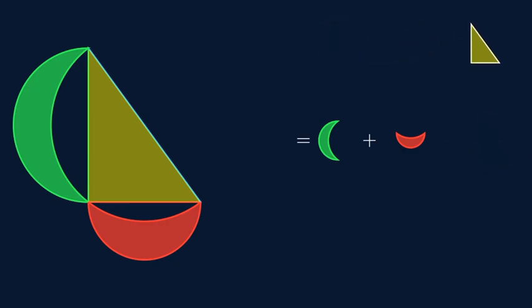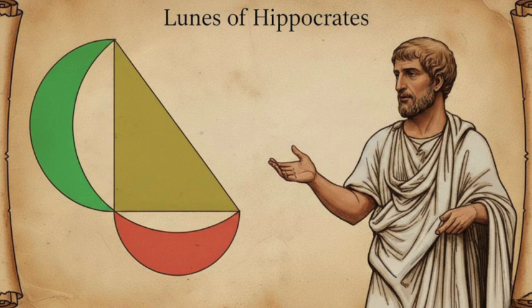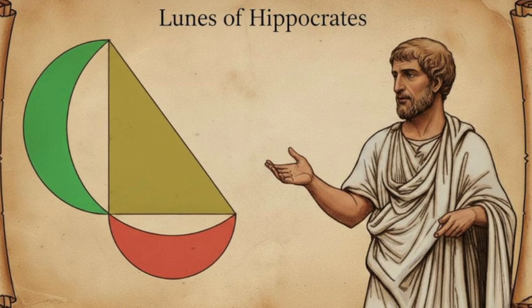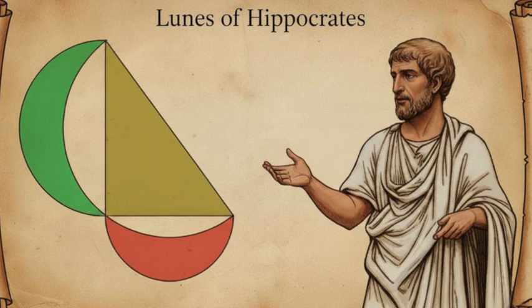And what are we left with? Triangle equals crescents! And that's the Lunes of Hippocrates, a 2,000-year-old discovery that still feels magical today.